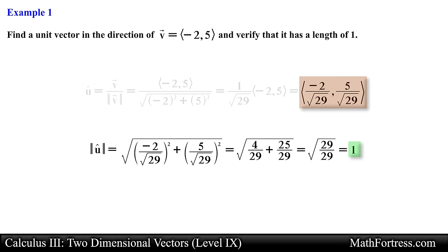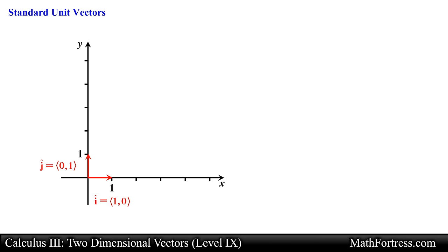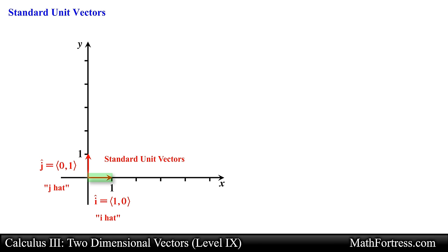Now that we are familiar with unit vectors, it is time to talk about a special type: specifically the unit vectors with components (1, 0) and (0, 1). These unit vectors are called the standard unit vectors in a plane. On paper we denote them with a lower case letter and a hat symbol on top, pronounced as i-hat and j-hat respectively. i-hat points in the direction of the x-axis and j-hat points in the direction of the y-axis. Both vectors have a length or magnitude of 1.